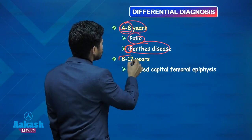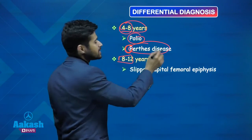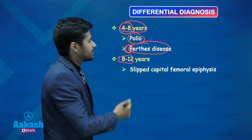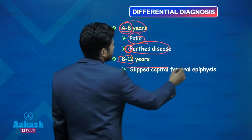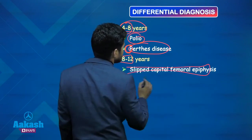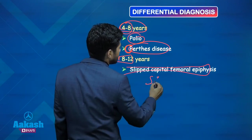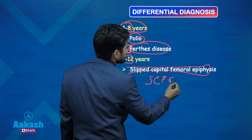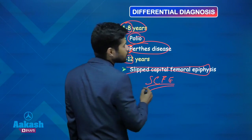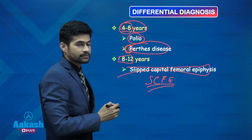In 8 to 12 years, now the age is a little older — SCFE, that is the slipped capital femoral epiphysis, will cause the Limp.